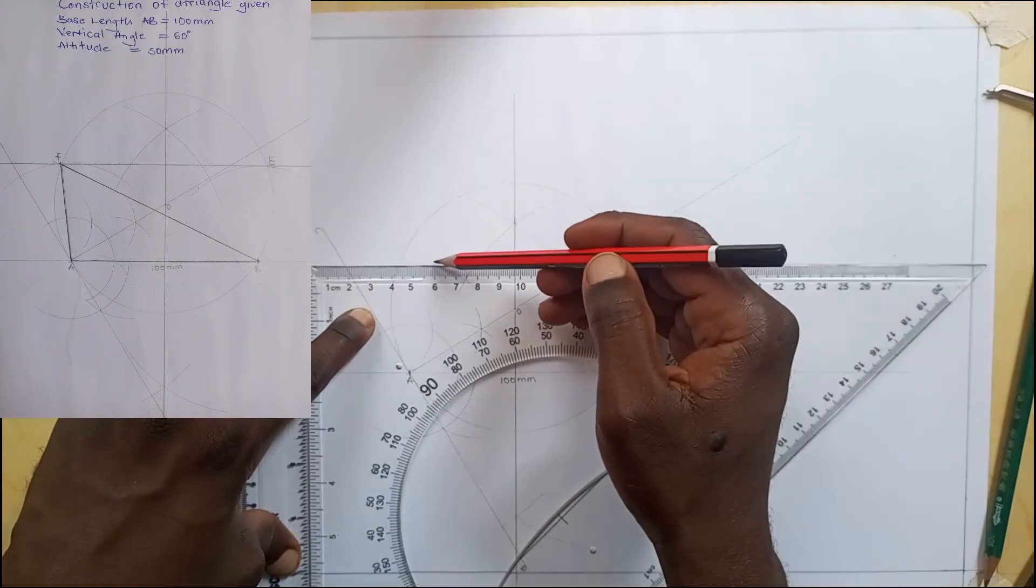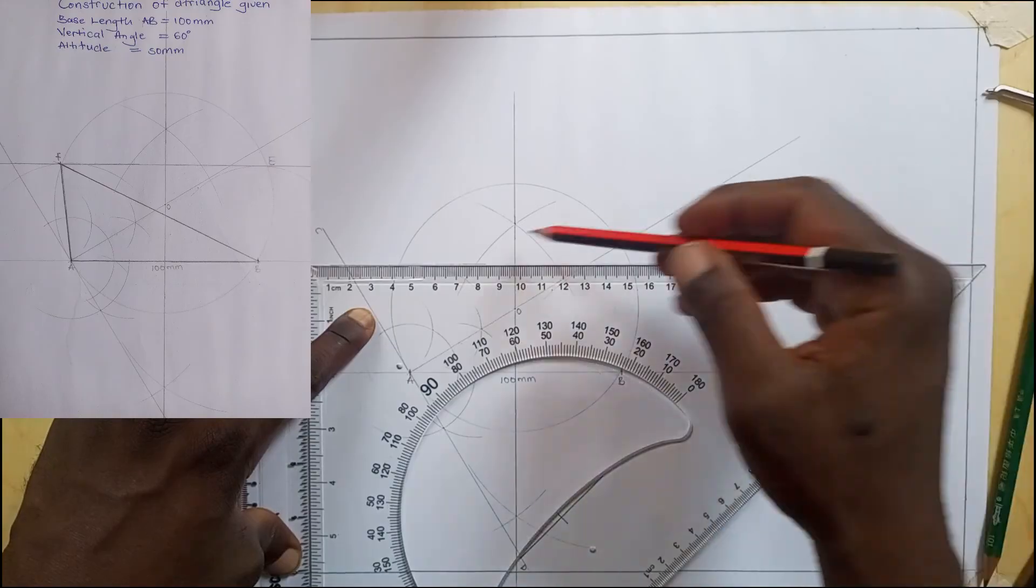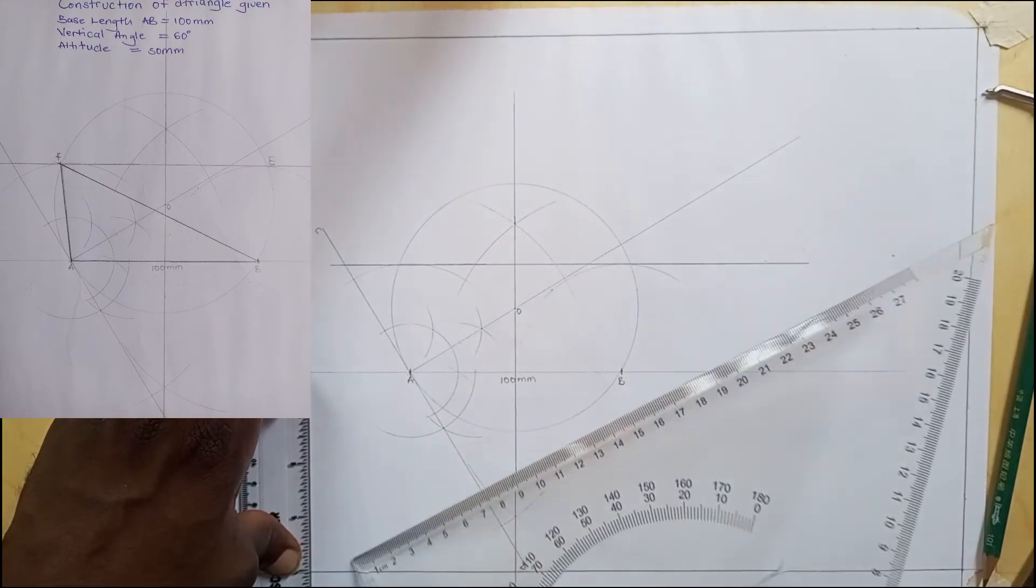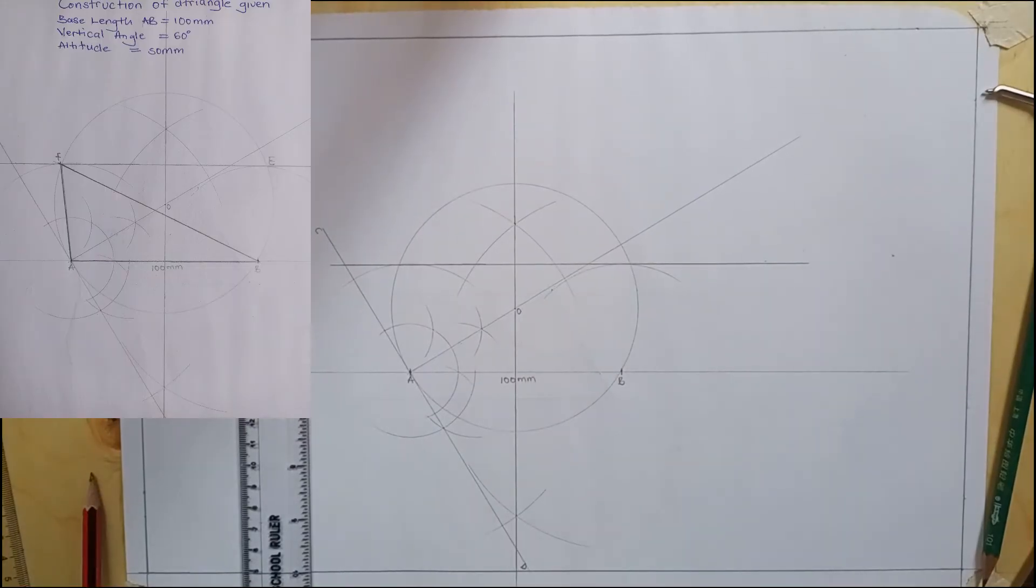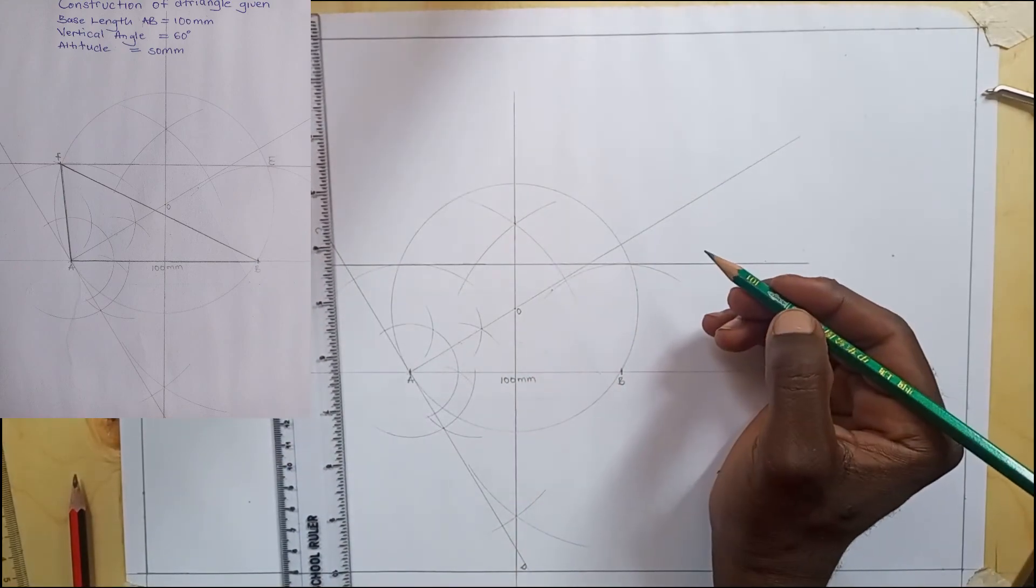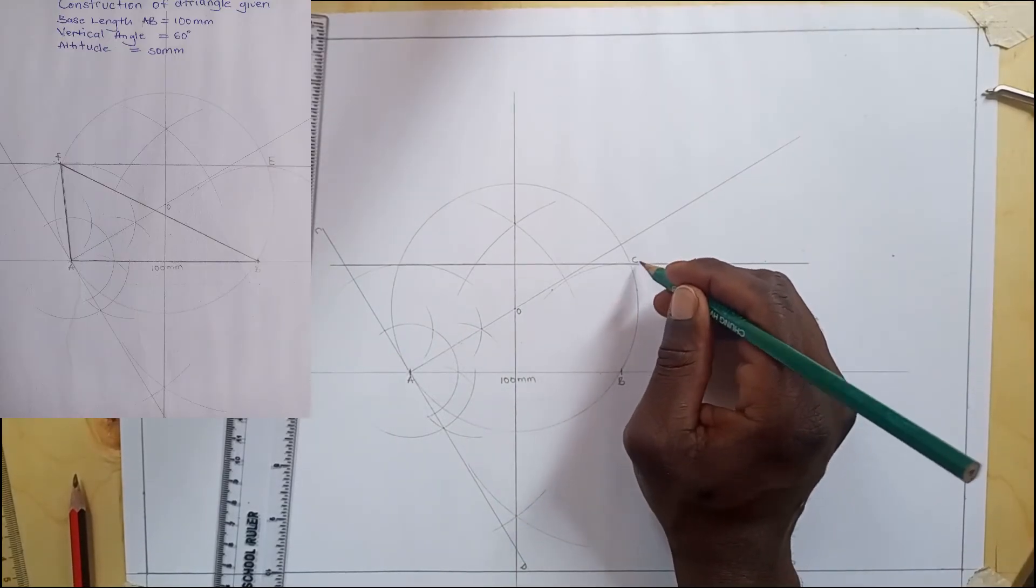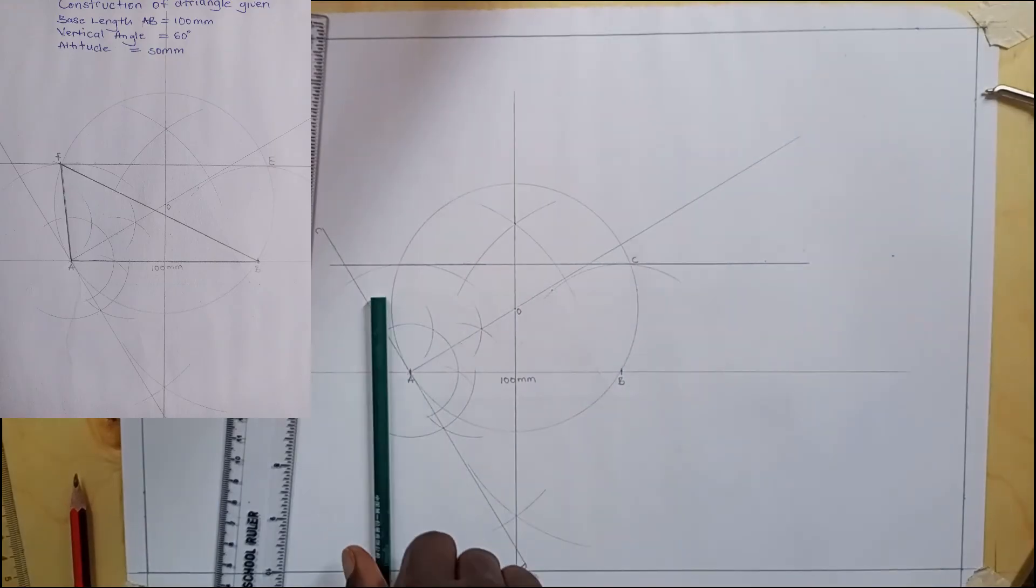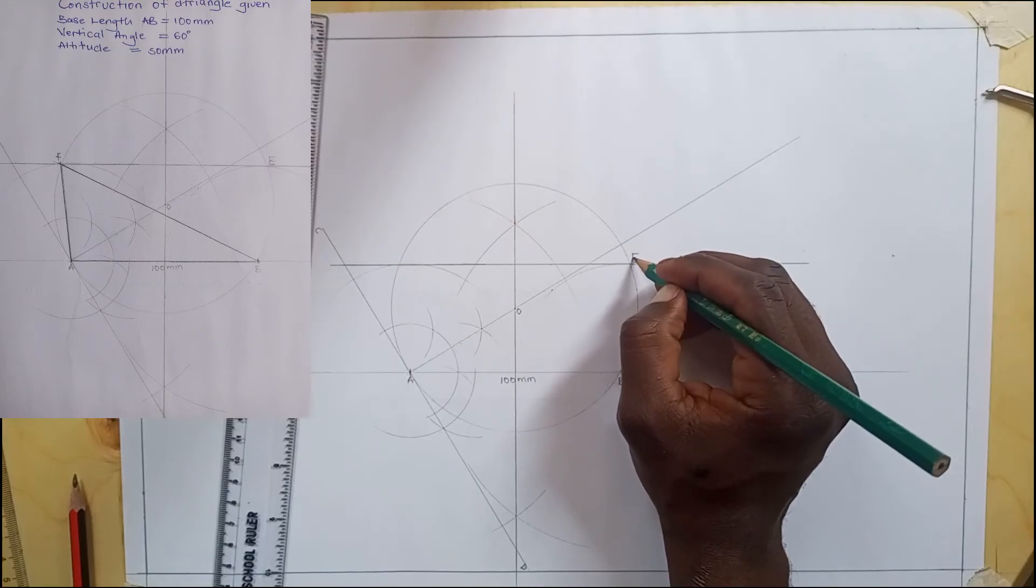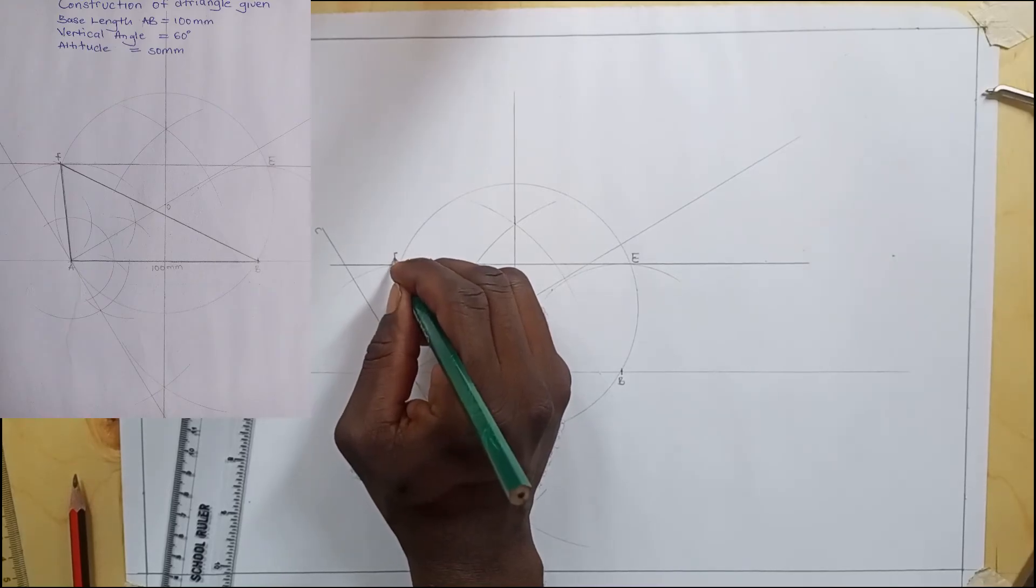I'm going to draw a line that is tangential to these arcs. When you're done, we shall call this point E and this point F.